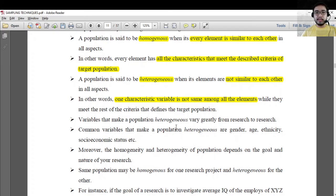Variables that make population hetero are like gender, they could be different. Or age, they differ. Ethnicity, there are also differences.